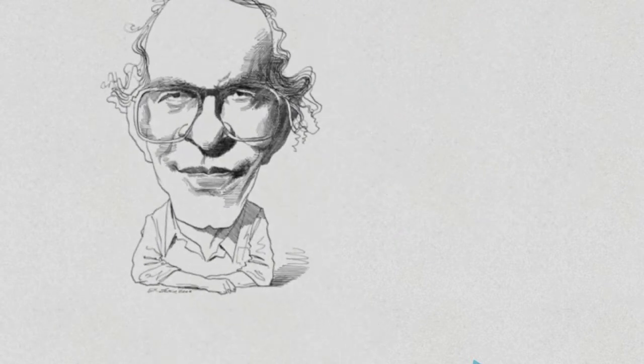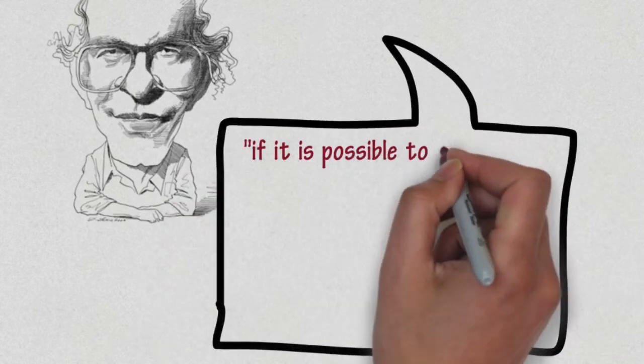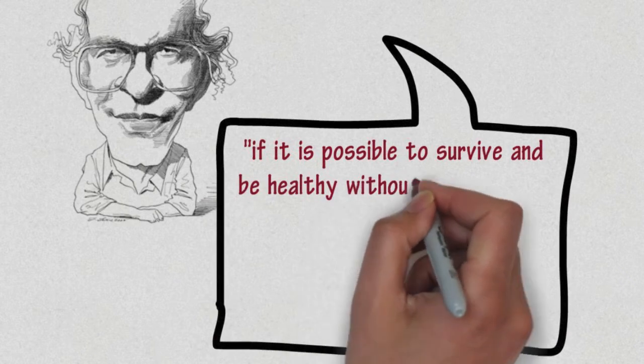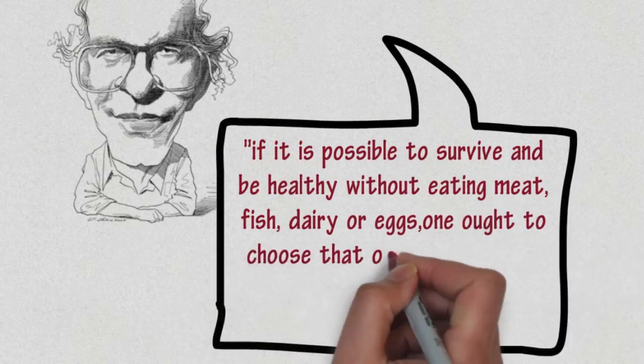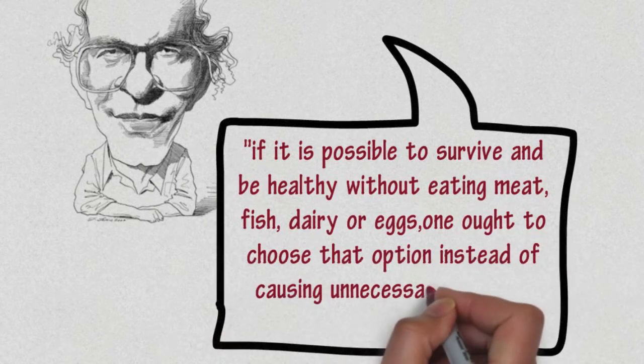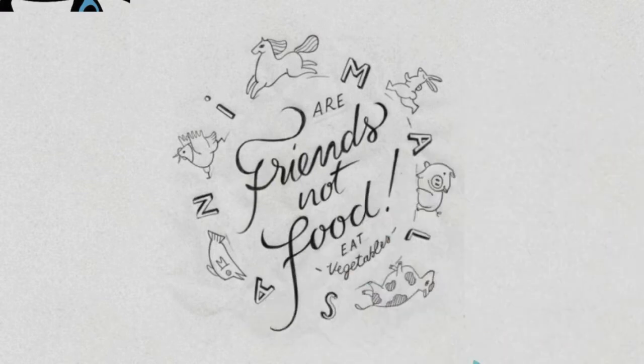The measure of the ethical nature of killing animals for food is addressed by Peter Singer, who has argued that if it is possible to survive and be healthy without eating meat, fish, dairy or eggs, one ought to choose that option instead of causing unnecessary harm to animals. For many vegans, such as myself, this is the core reason for the choice of veganism.